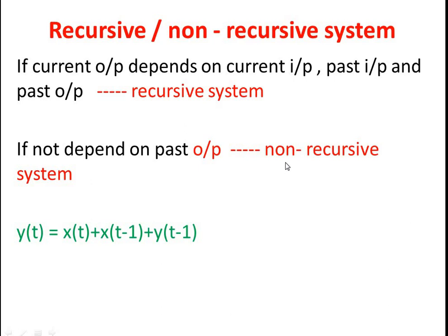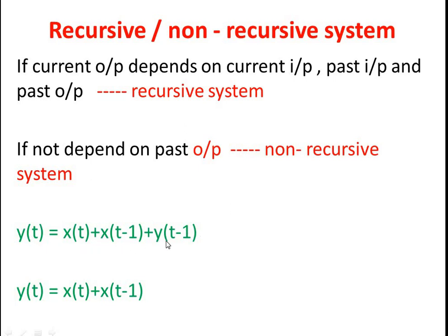Now we will see the mathematical terms. For a non-recursive system, the present output contains a present input as well as a past input — it does not have any past output. So this equation indicates a non-recursive type of system. Whereas in the first case, we have present input, past input, as well as past output, so that is a recursive type of system.